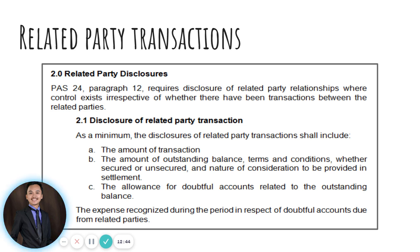Disclosure should also include the allowance for doubtful accounts related to the outstanding balance. Since they are related parties, there could be conflicting interest between these two parties, so allowance for doubtful accounts related to an outstanding liability should be properly disclosed. The expense recognized during the period in respect of doubtful accounts due from related parties is also required to be disclosed in the financial statements.